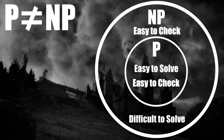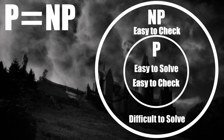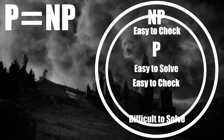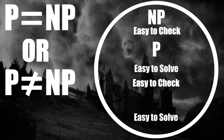On the contrary, those who believe that P does equal NP think that both these sets of problems are the same — easy to solve and check in polynomial time. Yet no one has been able to prove which argument is correct.